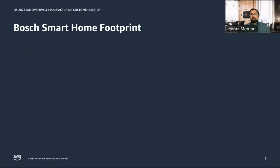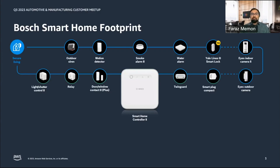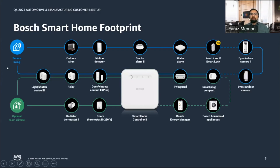Let's talk about the footprint of Bosch Smart Home. At the heart of our smart home solution is our gateway called the Smart Home Controller. It provides home automation possibilities revolving mainly around two domains. The first domain is secure living, which includes devices such as motion detectors, smoke detectors, and smart cameras. The second domain is optimal climate, which includes devices such as shutter controllers, radiator thermostats, and other devices like door-window contacts. Some devices are part of both domains because they function in both.